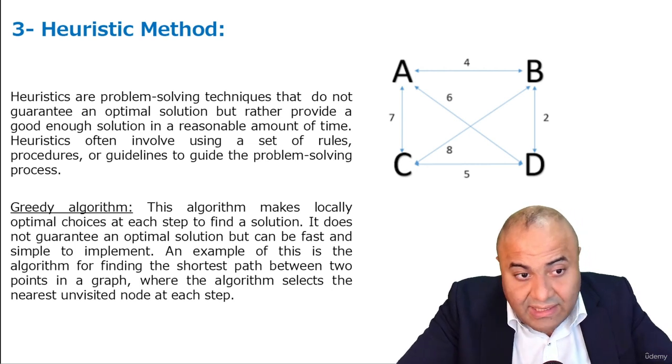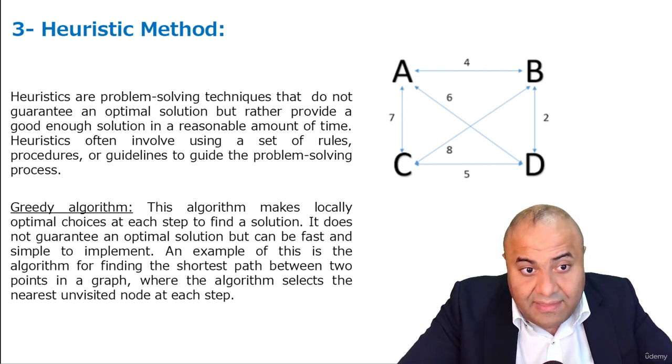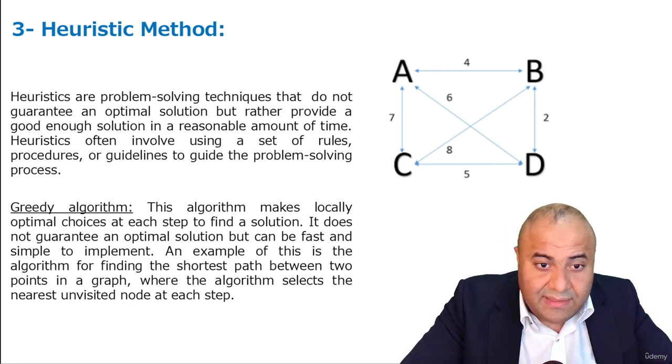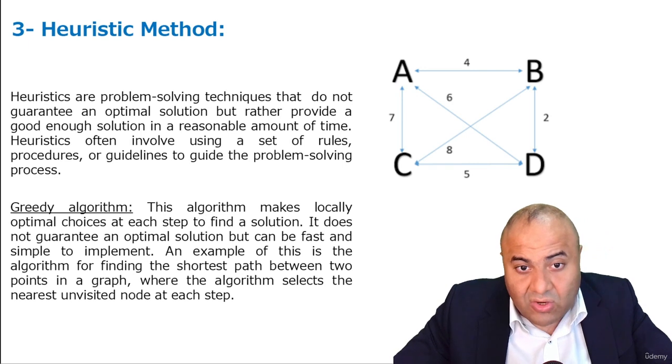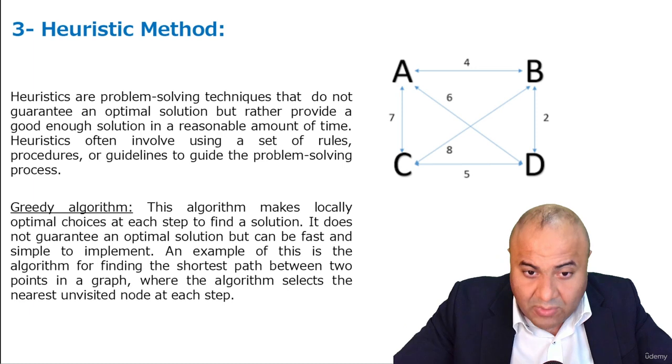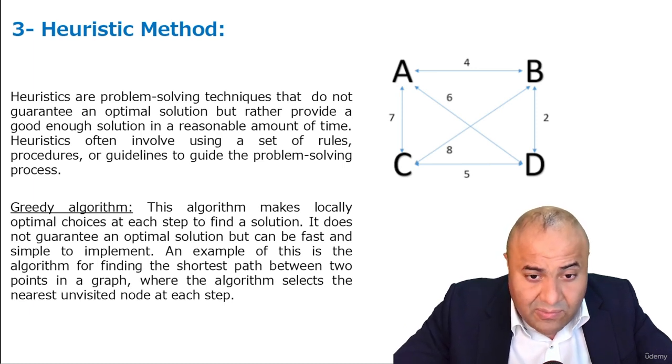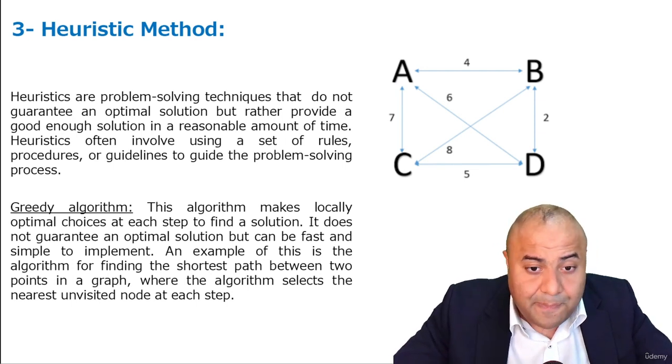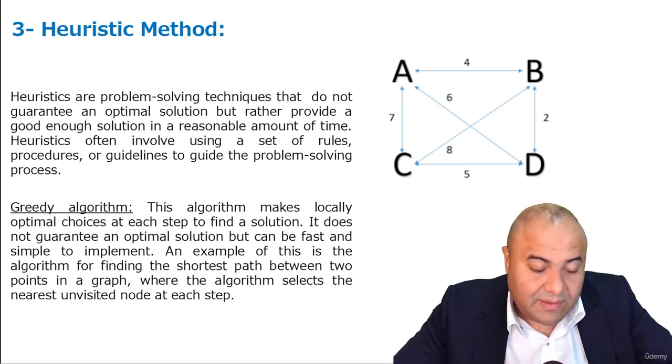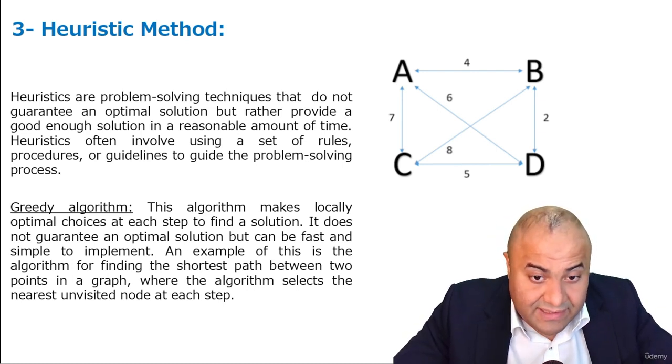The first method is a greedy algorithm. And this method tries to find always the greedy solution. For example, if we are a salesman who starts from point A and wants to go to all points possible, we can use this greedy solution to give us some solution, not necessarily the best solution, which is what the heuristics method is all about—finding just some solution.